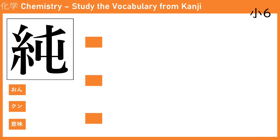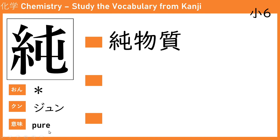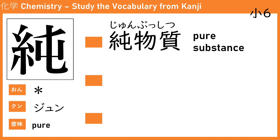The next kanji is 純 (jun). The meaning of 純 is pure. The first word is 純物質 (jun bu-shitsu). We know that 物質 means matter or material, and 純 is pure, so 純物質 means pure substance.